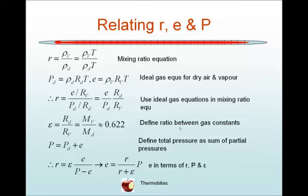The pressure due to the dry air Pd is equal to ρd Rd T, and the vapour pressure e is equal to ρv Rv T. Substitute for ρT for both expressions, and then flip the two fractions that you get on the numerator and the denominator, and you end up with the expression R is equal to e over Pd times Rd over Rv.